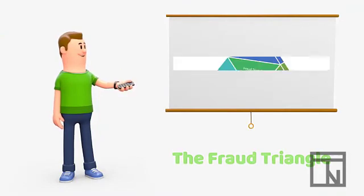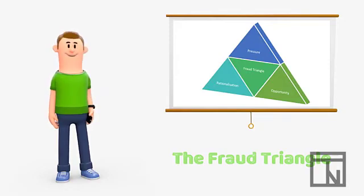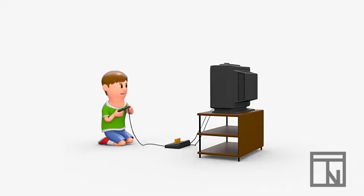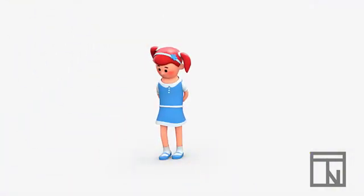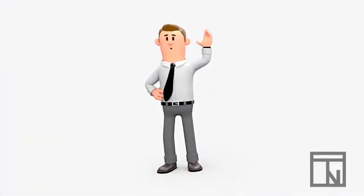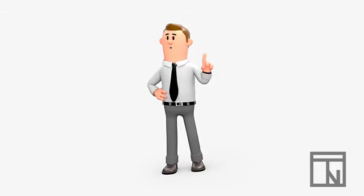So there are the three parts of the fraud triangle in action: pressure, rationalization, and opportunity. The amazing thing about the fraud triangle is that all three parts must be present or the fraud cannot occur. For example, if a student has no pressure to obtain higher grades, even if they could rationalize their behavior and the opportunity to cheat existed, they wouldn't have a need to do it. And if the student felt pressure and saw an opportunity, but couldn't or wouldn't justify cheating, they wouldn't do it either. And even if a student felt pressure to cheat and was willing to rationalize it, they still can't cheat if their teacher is thorough and doesn't give them the opportunity.